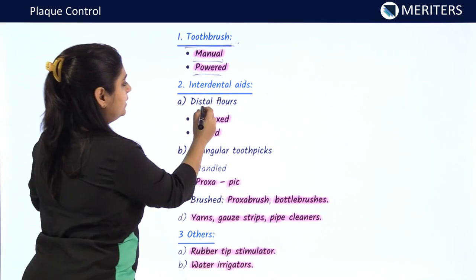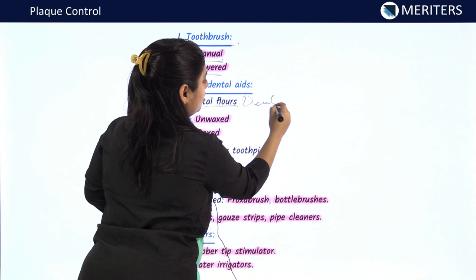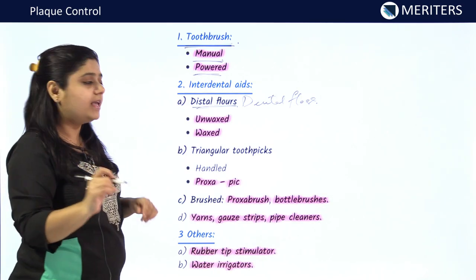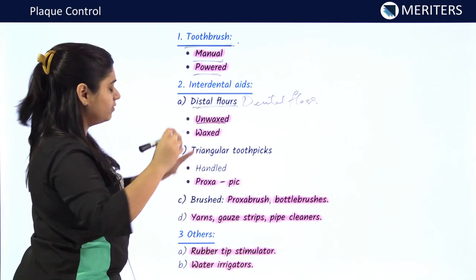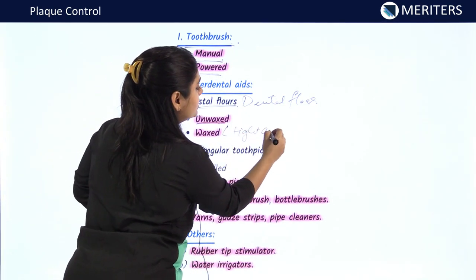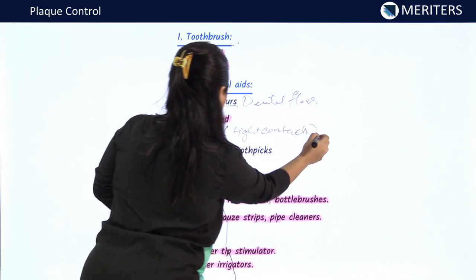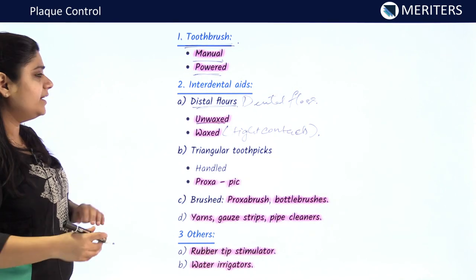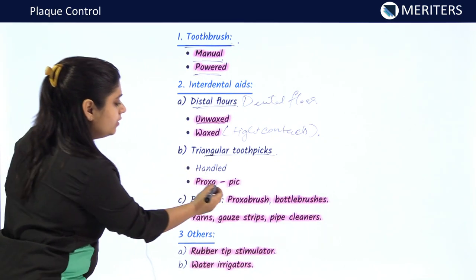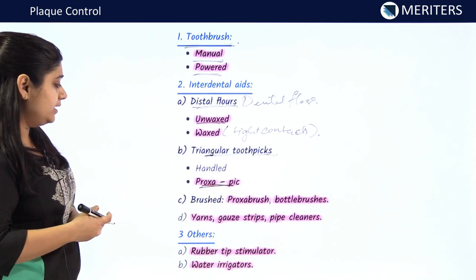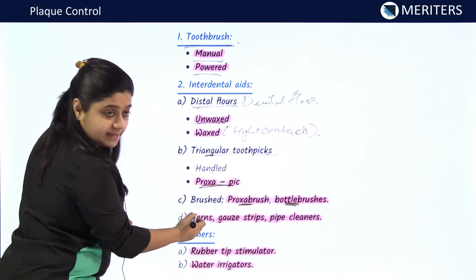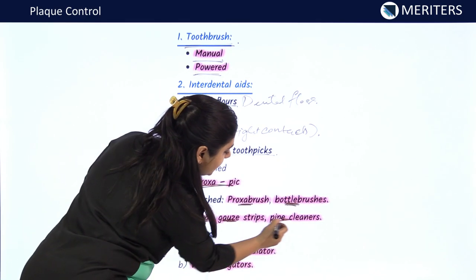The interdental aids used include dental floss, which may be waxed or unwaxed. In most cases we use unwaxed dental floss; however, if very tight contacts are present, we use waxed dental floss. The second type of interdental aid is triangular toothpicks, which may be handheld or used with a proxapic. The third type is interdental brushes, including proxa brushes and bottle brushes. The remaining aids are yarns, gauze strips, and pipe cleaners.